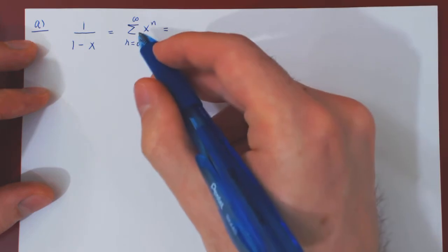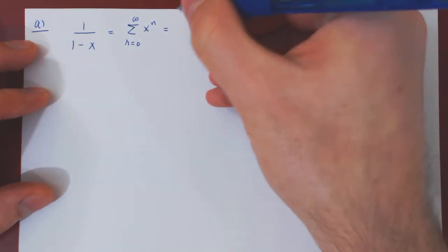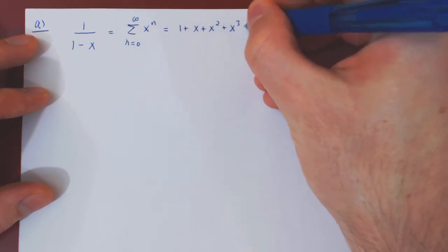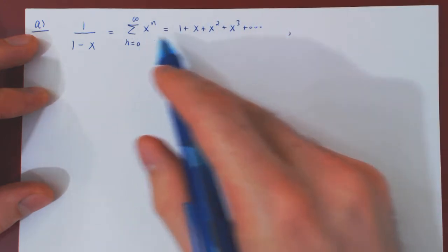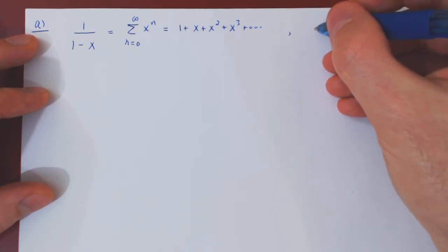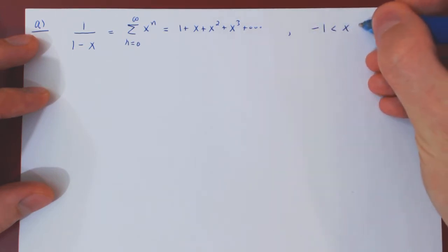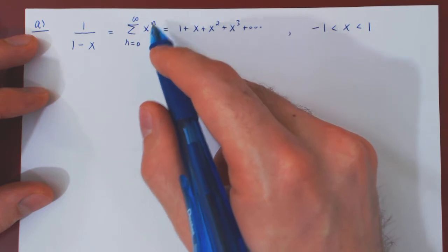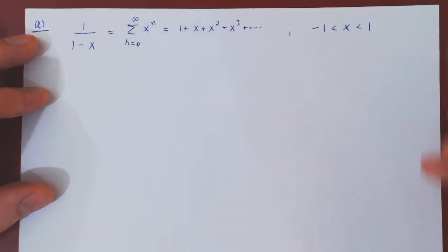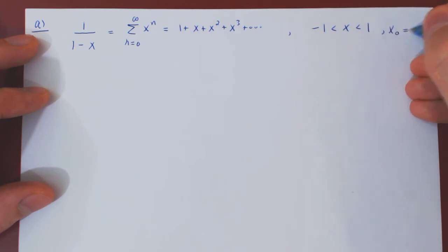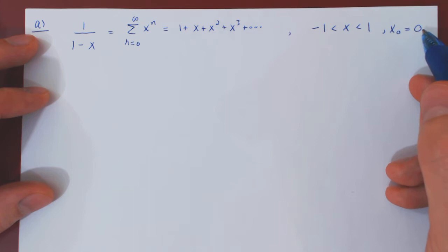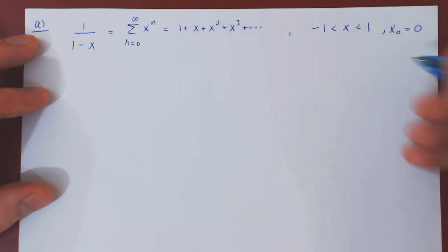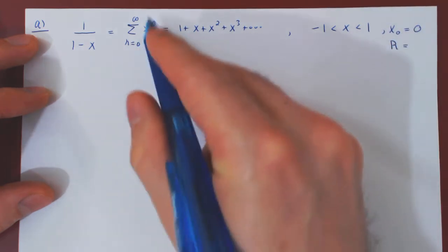We can expand the first few terms: 1 plus x plus x squared plus x cubed and so forth. This power series converges only for x strictly between negative 1 and 1. The center of this power series is 0, and the distance from the center to the boundary is 1, so the radius of convergence is equal to 1.